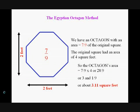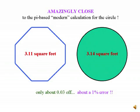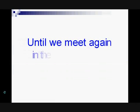Amazingly close to the pi-based modern calculation for the circle! The octagon's area is 3.11 square feet, the circle area is 3.14 square feet. Only about 0.03 off, about a 1 percent error.